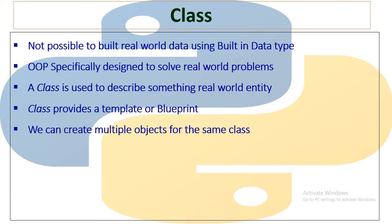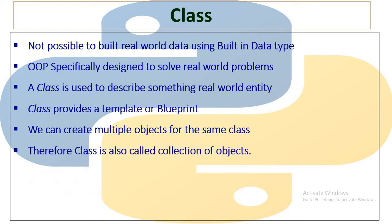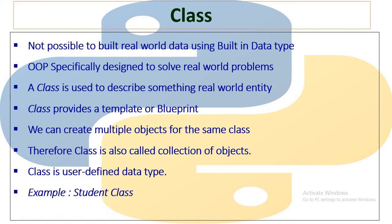We can create multiple objects for the same class. In other words, class is also called a collection of objects. Basically, when we create an object, the data type of that object is the name of the class. So class is also called a user-defined data type. We will see one example of a student class.